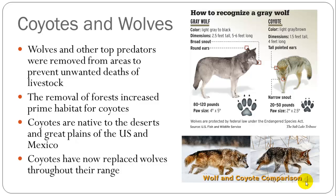What happened is wolves and other top predators were extirpated — were killed and removed from most of the United States to prevent unwanted deaths from livestock. So wolves would go in and kill sheep or cows or chickens. And as the U.S. colonized more and more of the land, wolves were really pushed out of the areas where humans lived. Forests were also removed to put in plants, cities, and human habitation.